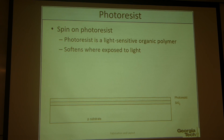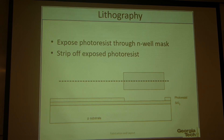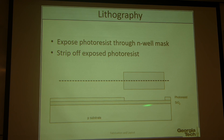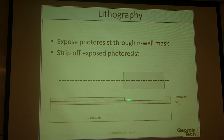Then we spin-coat the so-called photoresist. Photoresist is a light-sensitive organic polymer. If we expose UV light onto this photoresist, it gets softened so that we can remove it. Using the pre-designed mask, we expose a certain area and shine the light onto it. The photoresist will be exposed to the light and softened. Then we apply a liquid called developer and remove the exposed photoresist area.